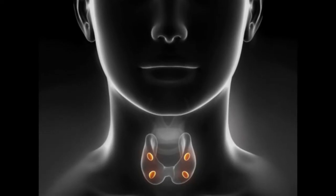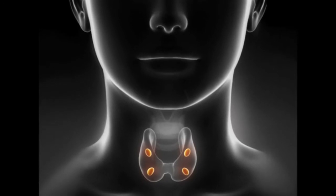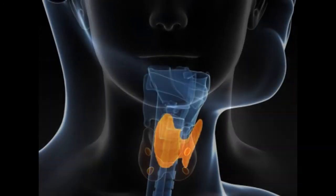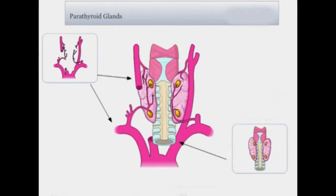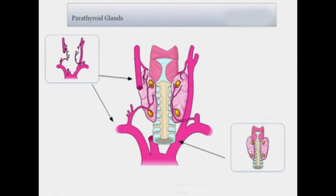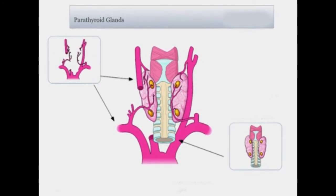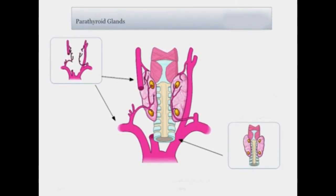Hello students, today we are going to deal with the topic on hyperparathyroidism, where the parathyroid glands are involved. These parathyroid glands are small glands of the endocrine system that are located behind the thyroid. There are four parathyroid glands which are normally about the size of a grain of rice. They are shown in the picture as mustard yellow glands behind the pink thyroid gland.